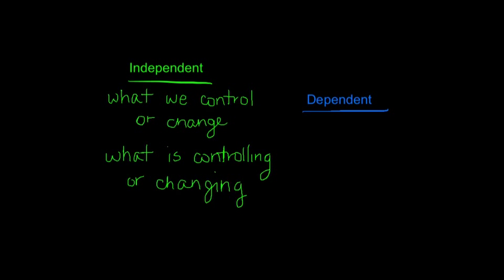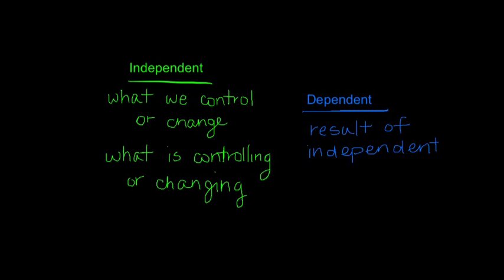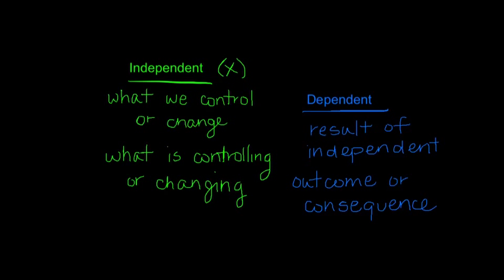The dependent variable is the result of the independent variable — it's also the outcome or consequence of a situation. In math, we deal with problem situations, but we're also going to look at independent and dependent variables as numbers. The independent variable will always be represented as the x variable, and the dependent variable — the result or outcome — is always the y variable. For every x that I input, I will always get out a y. So independent is what I'm changing, and dependent is the outcome of it.